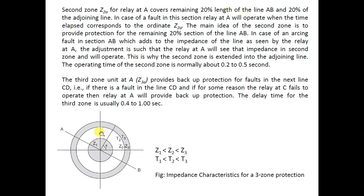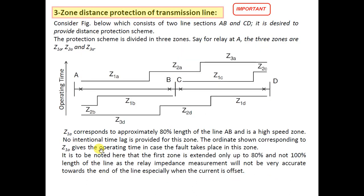If Z2 fails, the third layer of protection provided by Z3, which covers a greater radius, will come into action. Z1 is less than Z2, which is less than Z3. More coverage is provided by Z3, but the operating time is also the highest for that element. So if the primary layer fails, the secondary layer will come into action in a greater operating time; if the secondary fails, the third layer will clear the fault within the highest permissible time T3. This concept is utilized in three-zone distance protection.